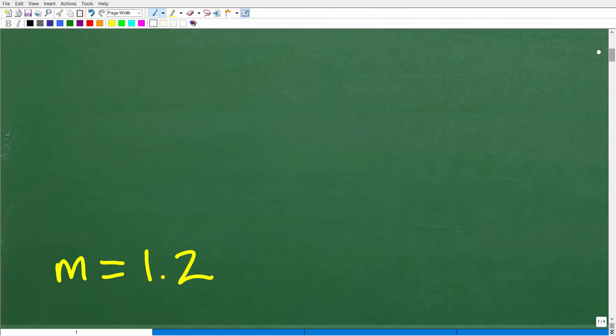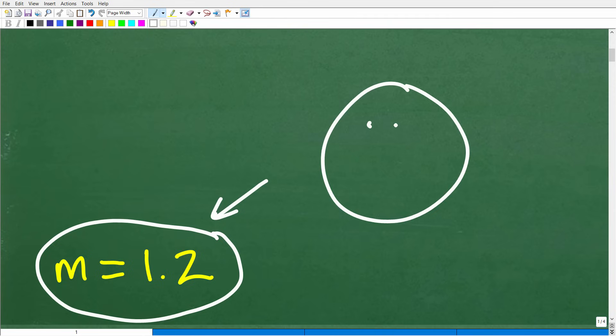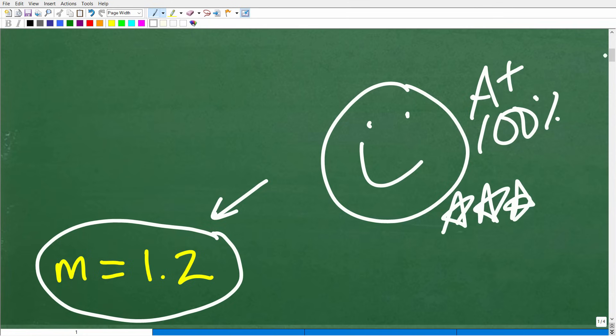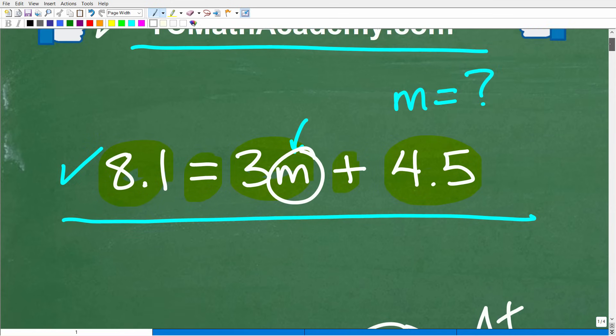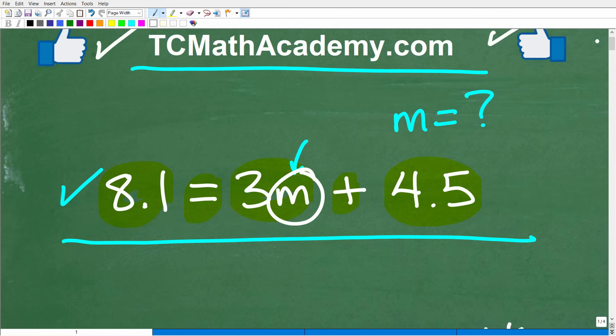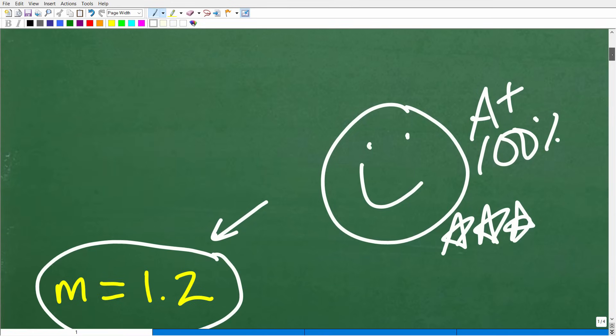The correct answer is m is equal to 1.2. All right, now if you got this right, that is fantastic. I've got to give you a nice little happy face and A+, a 100%, and multiple stars. So you can tell your friends and family that, indeed, you are a certified professional expert in the area of solving basic linear equations with decimals. Now if you tell that to your friends and family, they'll be like, I have no idea what you just told me, but it just sounds so impressive. So tell them anyway. So nice job in figuring this out.